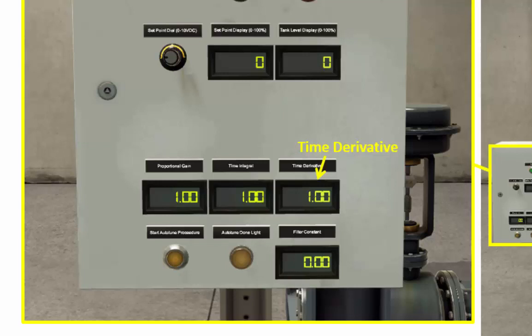Because we're going to use auto-tuning, we should set these gains so that at the beginning they're just set to 1 for the proportional, time integral, and time derivative gains. Then auto-tune will reset those to more appropriate values. This is the filter constant, which is also part of the gains, and the initial value here should be just 0. Then the auto-tune should adjust that as well.